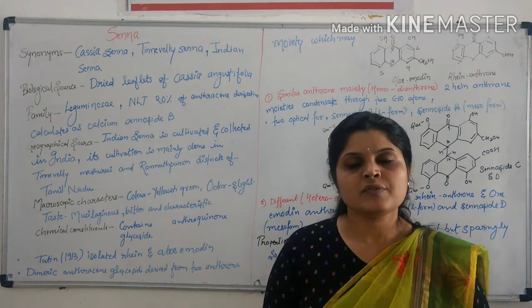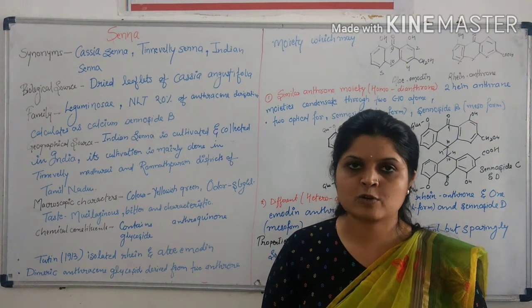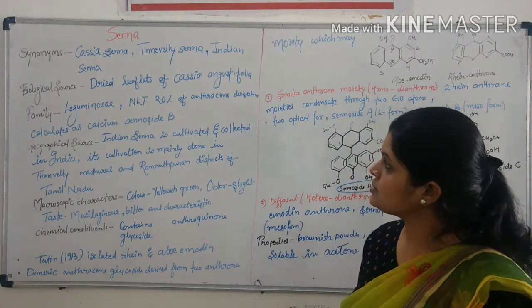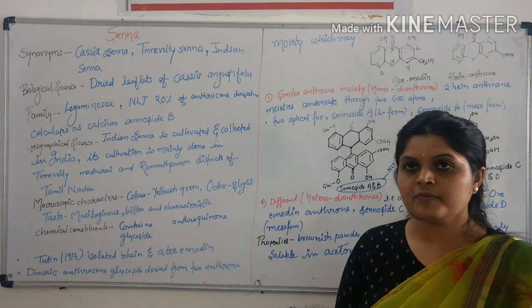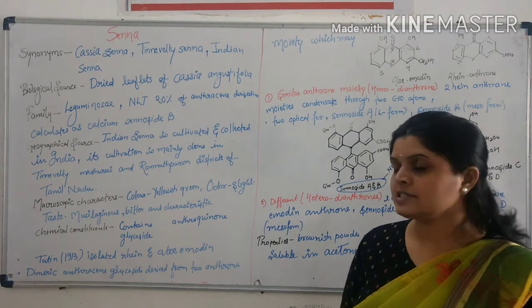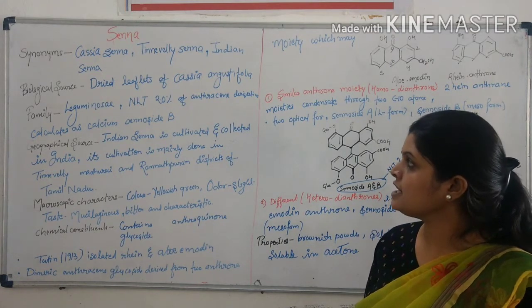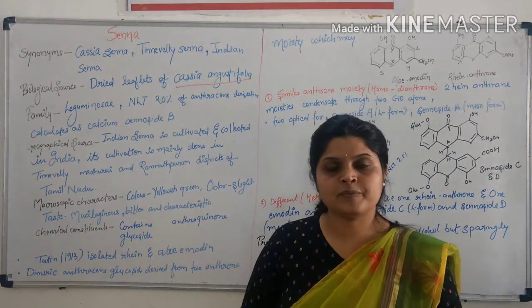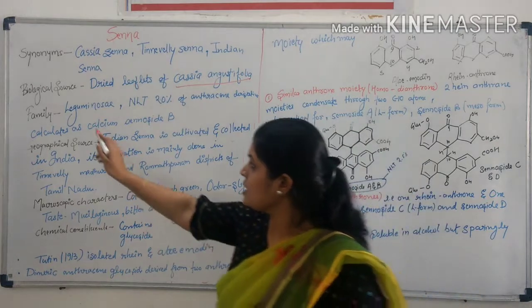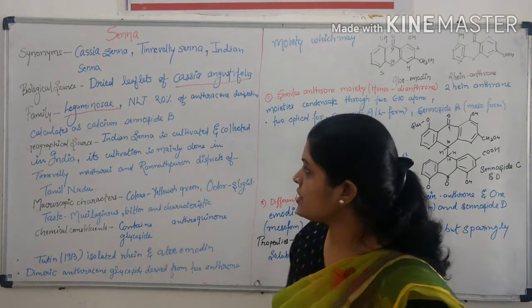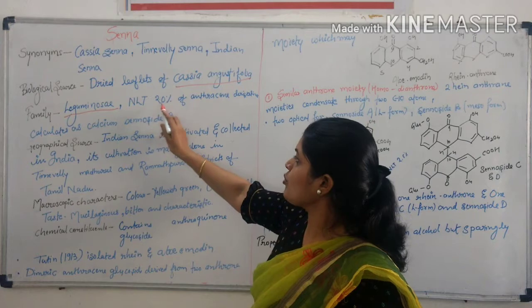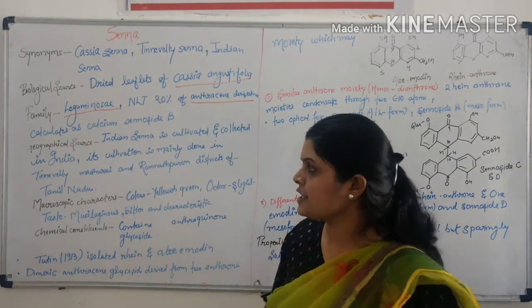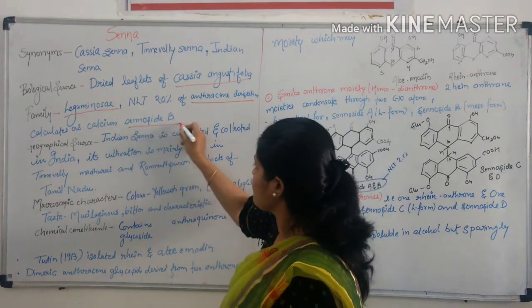In today's session, we are going to discuss about the Senna Glycosides. It is also known as Cassia Senna, Tinnevelly Senna, and Indian Senna. It consists of dried leaflets of Cassia angustifolia. It comes under the Leguminosae family. It contains not less than 2.0% of Cassia Senna glycosides calculated as sennosides B.